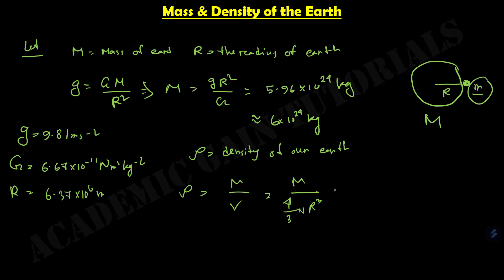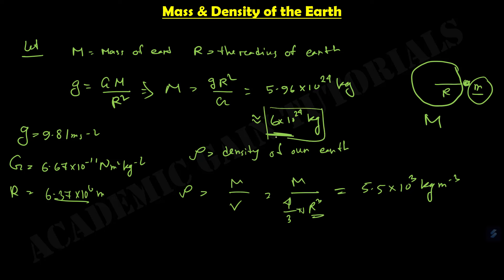So if I put in the value of M from the mass calculation and R, then we will get rho equals 5.5 into 10 to the power 3 kg per meter cubed. This is the density of our Earth. So we have found out the mass and the density of Earth.